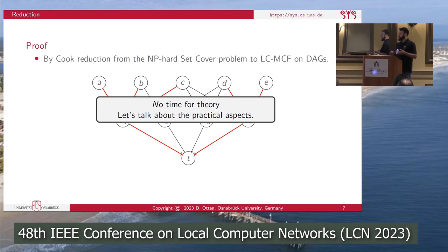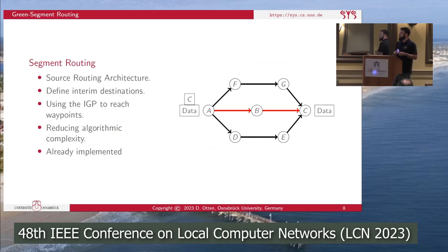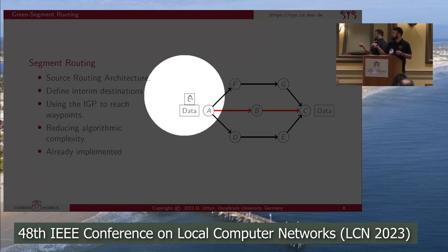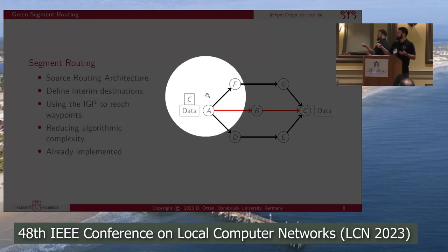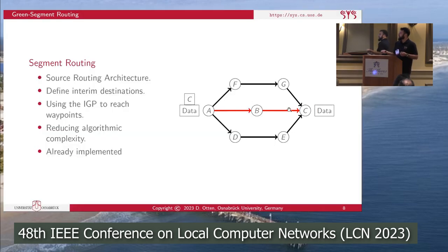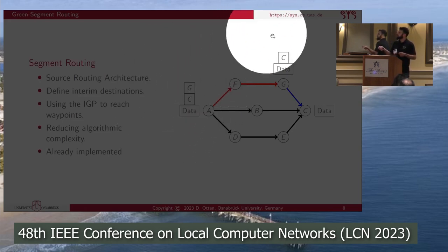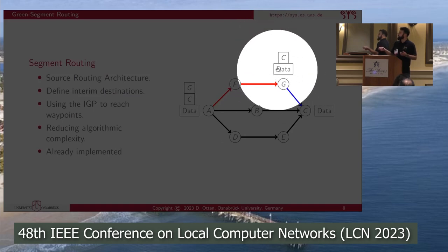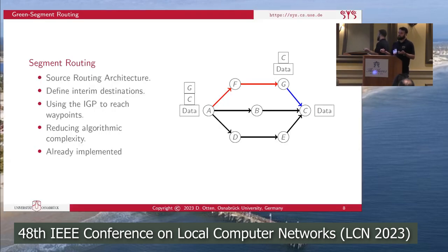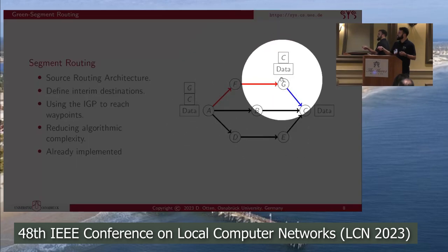We need a routing policy, but how do we implement it in the network? We decided to use segment routing, because it reduces the algorithmic complexity of the problem and relies on an already implemented traffic engineering method. When traffic enters the network at point A and must be forwarded to C, we usually rely on shortest-path routing. With segment routing, we add a label — say G — when traffic enters at A, the traffic is forwarded to G, router G pops the label from the stack, and then forwards the traffic to C. This is called two-segment routing, as it uses two segments: A to G, and G to C.